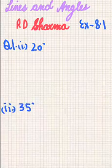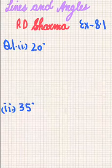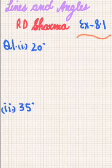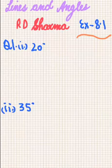Hello everyone. We are going to start the Lines and Angles chapter from R.D. Sharma. We are going to start from Exercise 8.1, first question, which says: write the complement of each of the following angles.